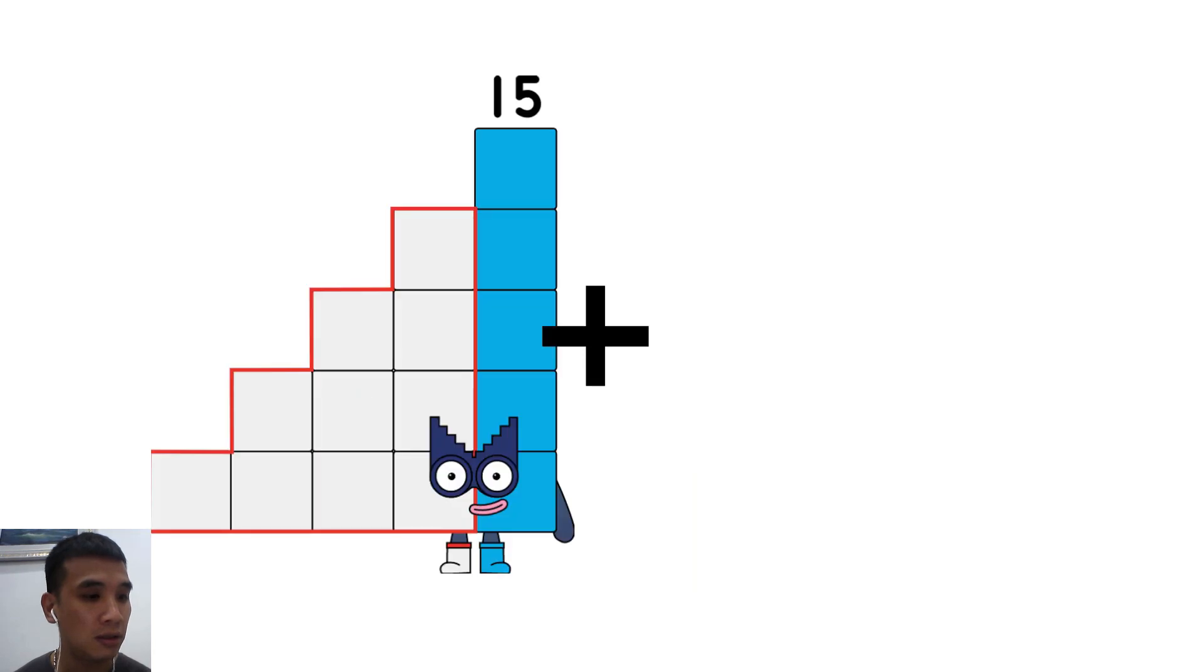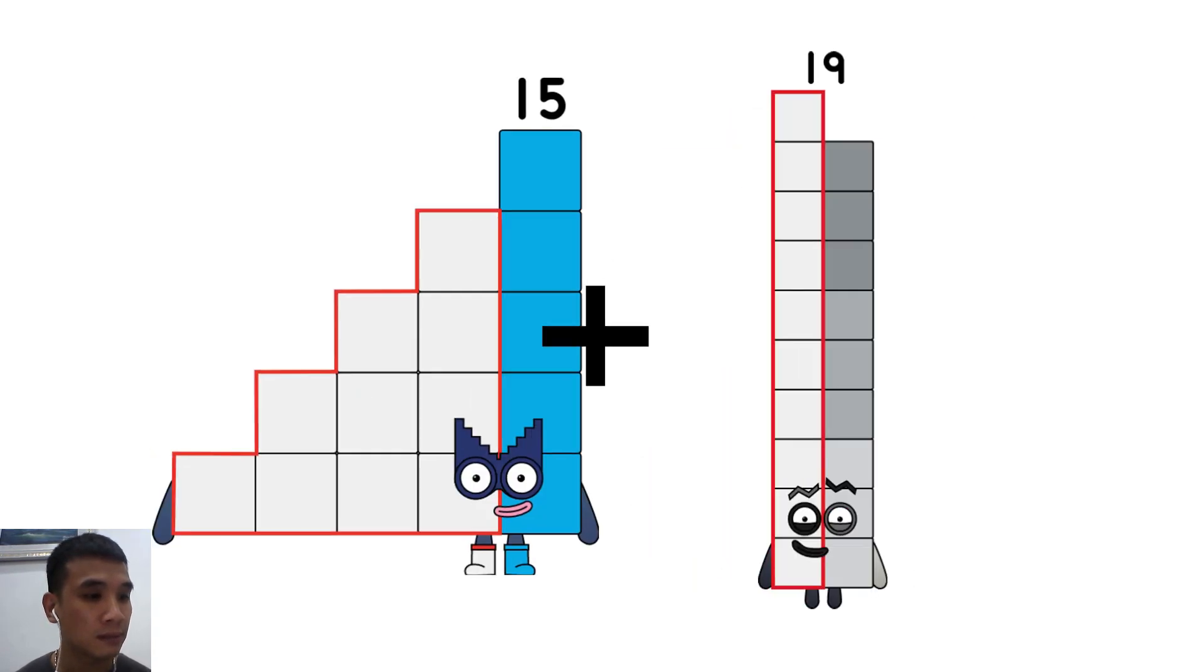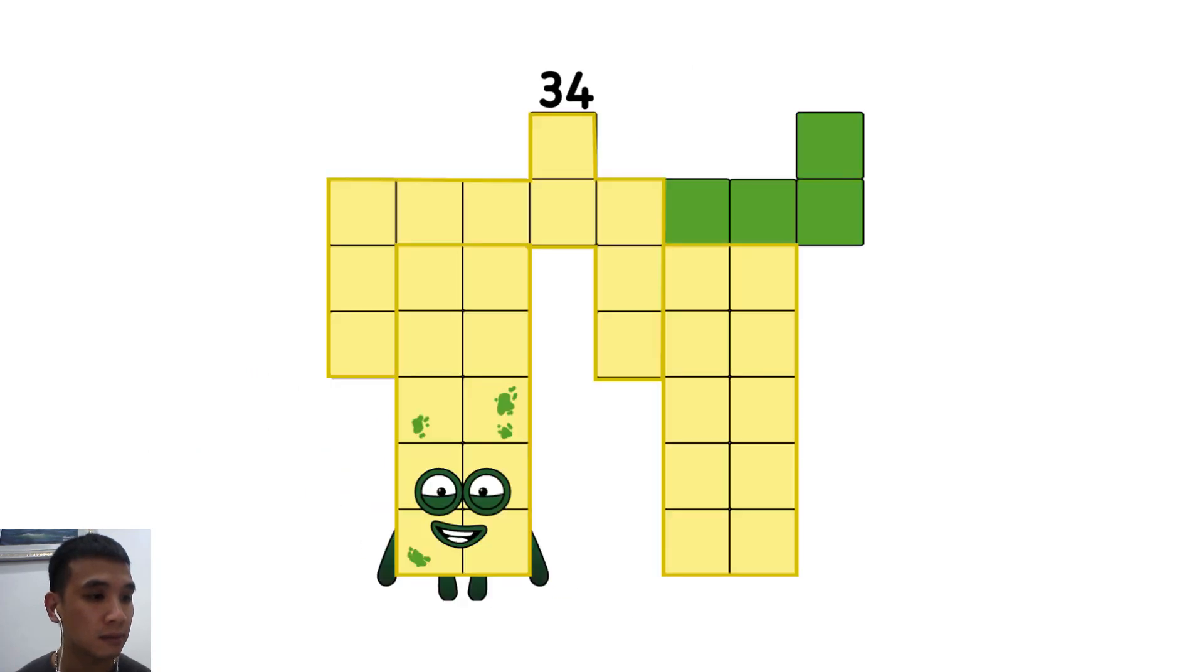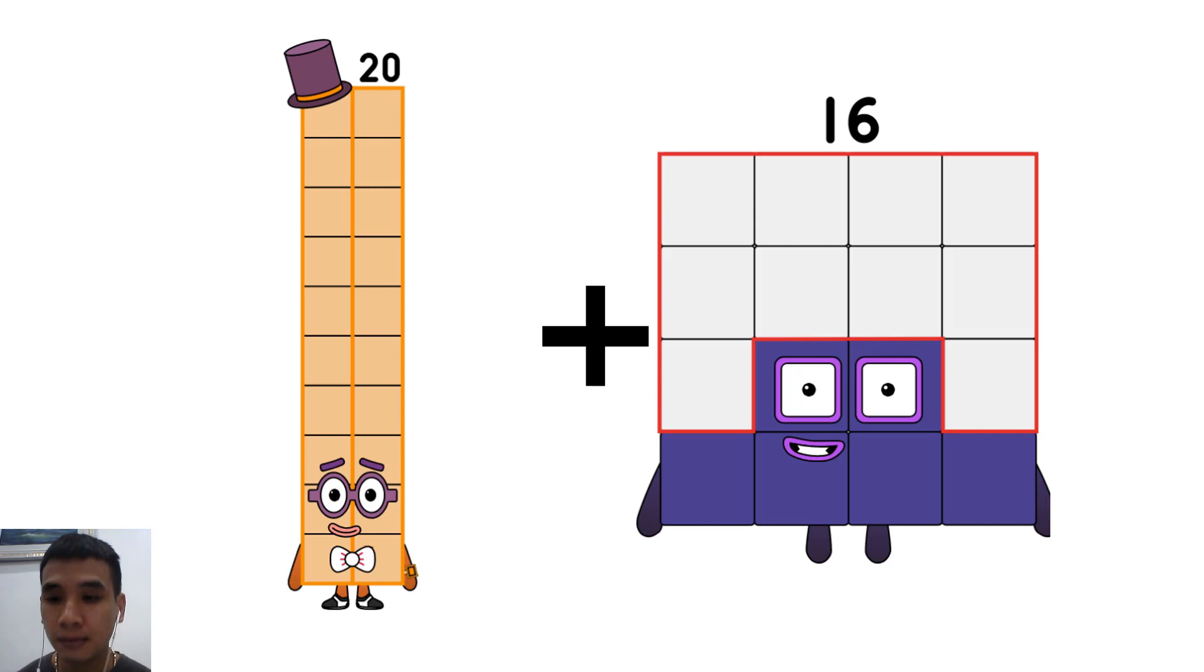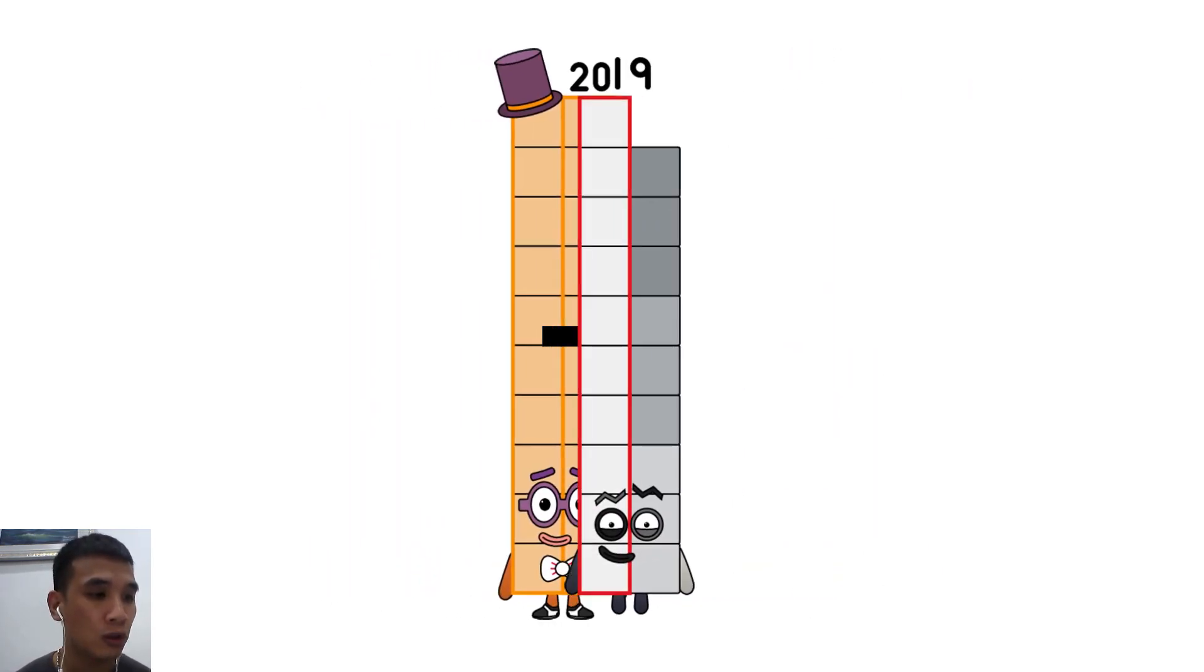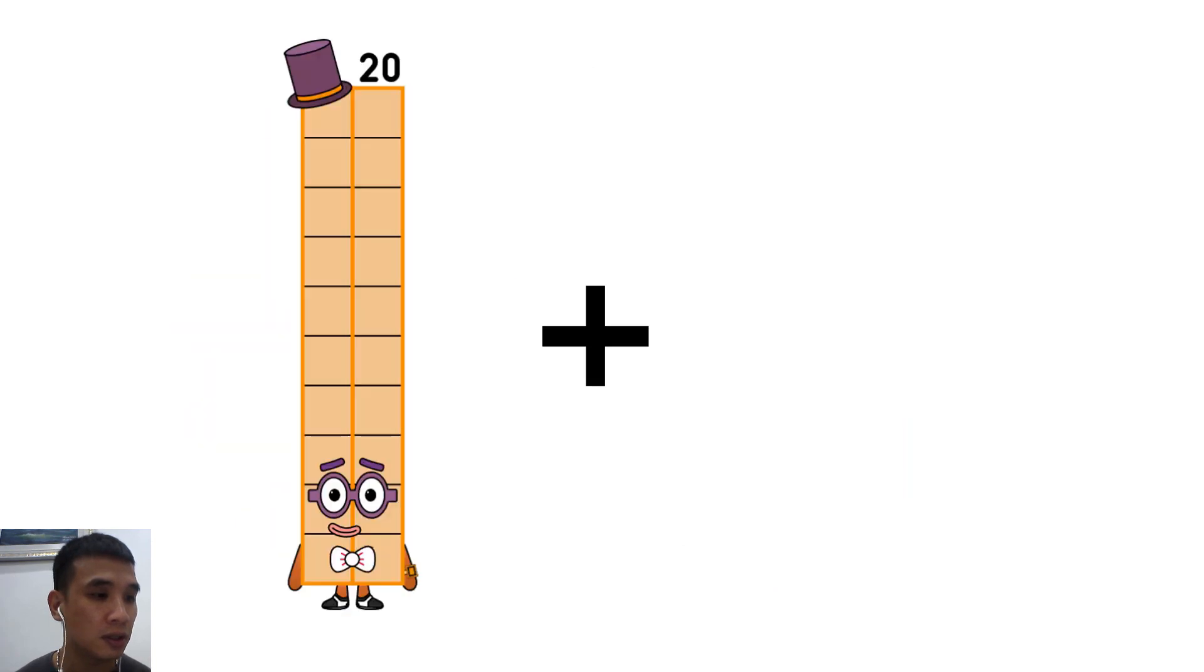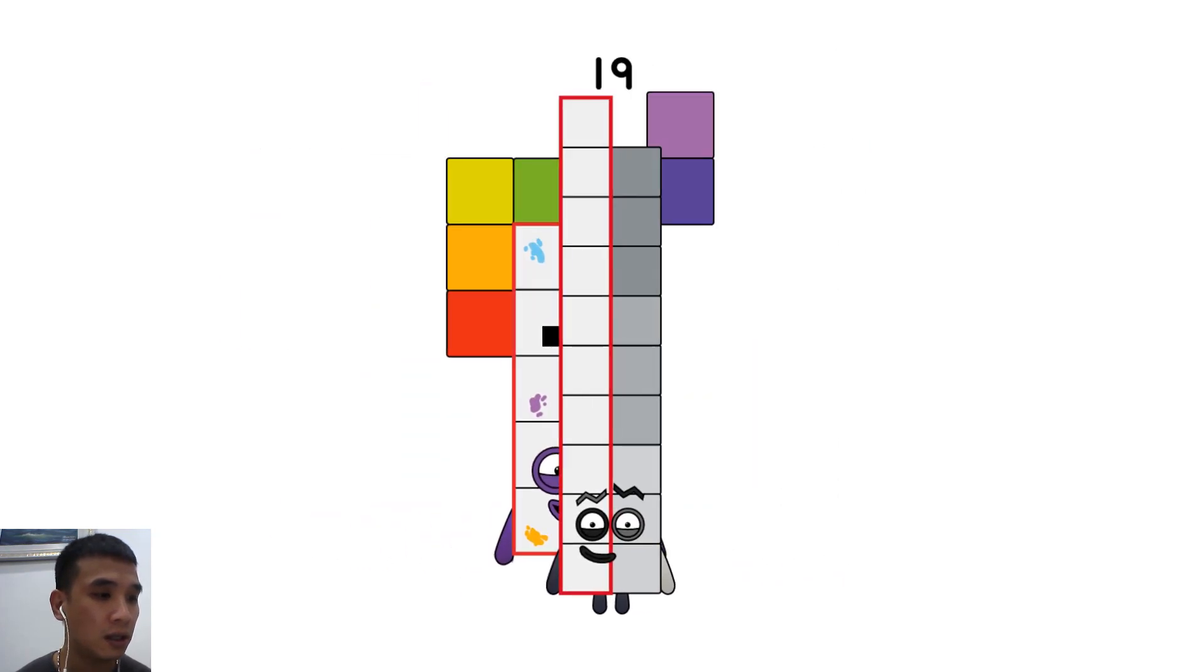15 plus 19 equals 34. 20 plus 19 equals 39. 17 plus 19 equals 36.